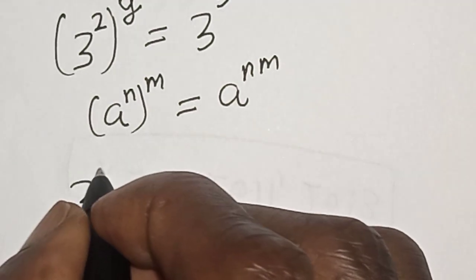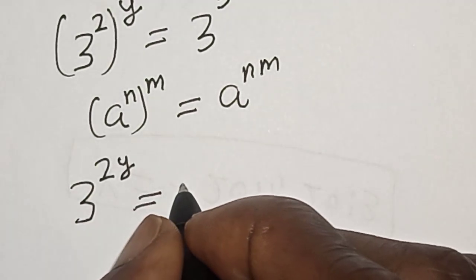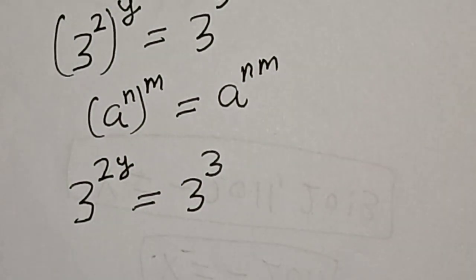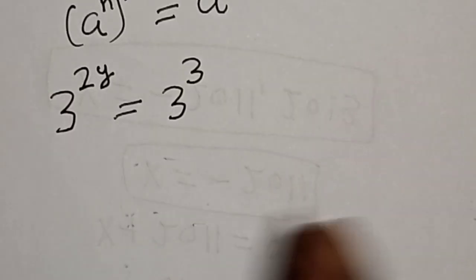3 raised to power 2y is equal to 3 raised to power 3. They have the same base.